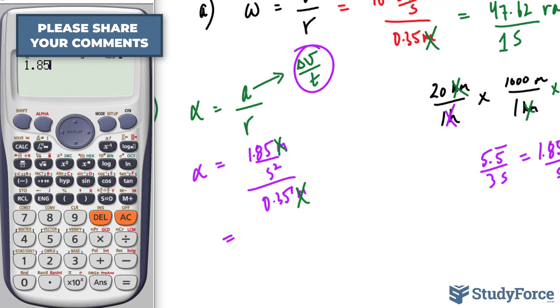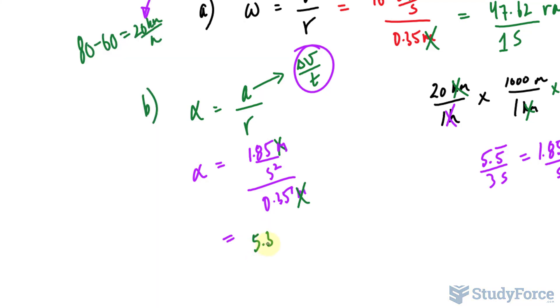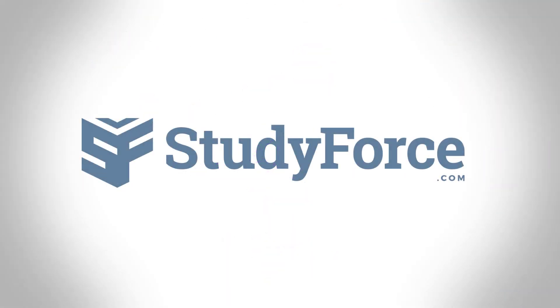1.85 divided by 0.35 makes roughly 5.3 per second squared, or like I said, radians per second squared. There you have it. Now you know how to calculate the angular acceleration.